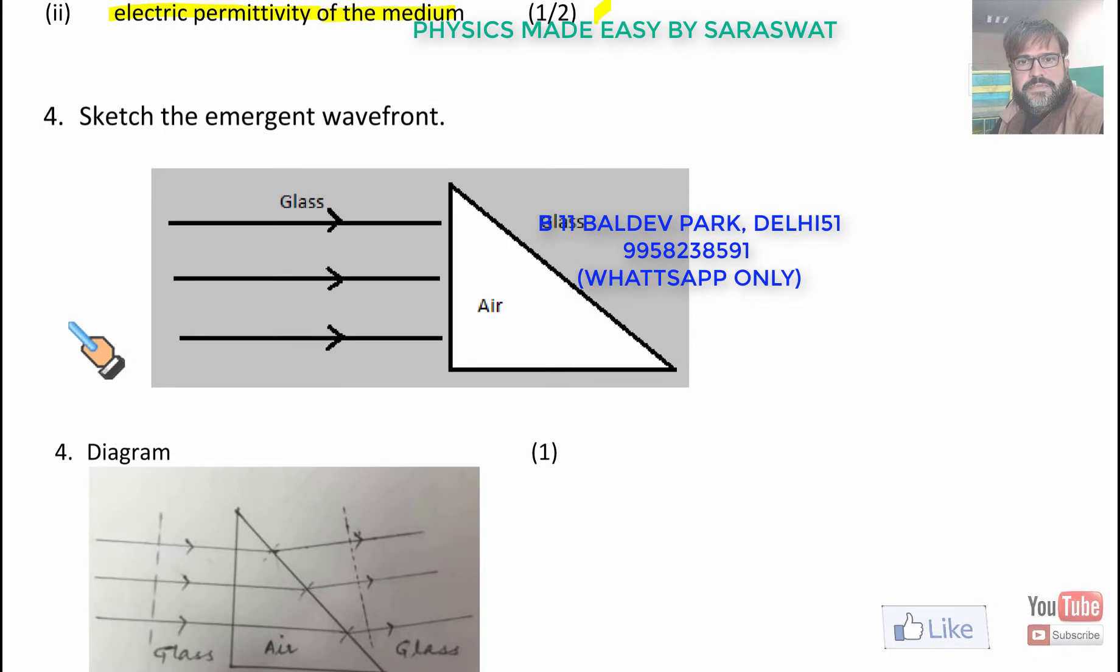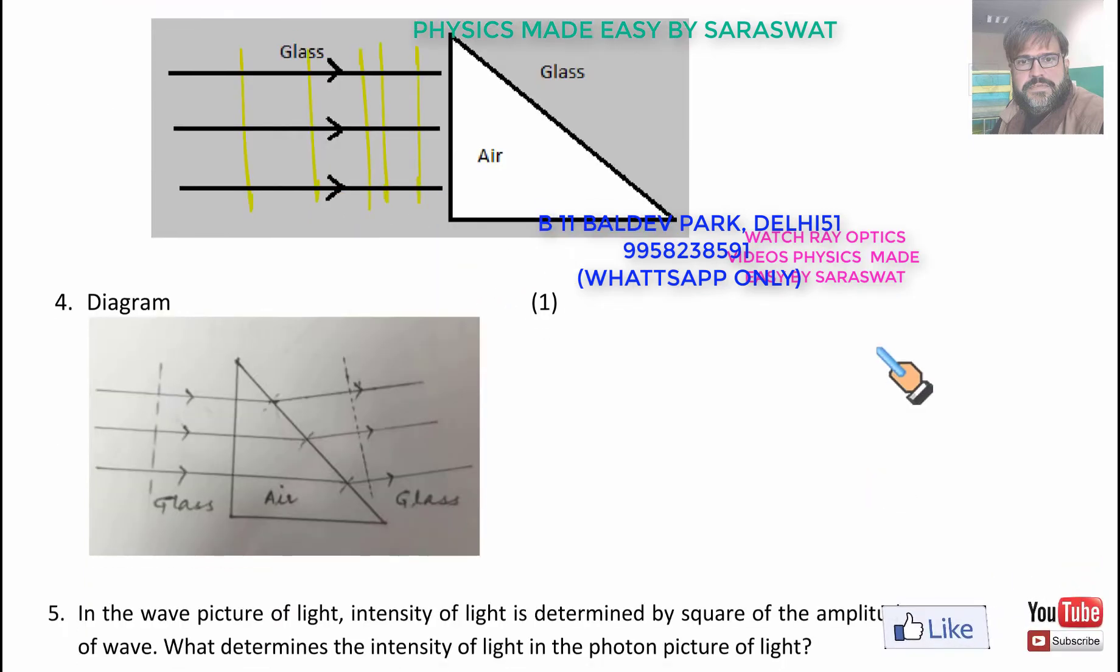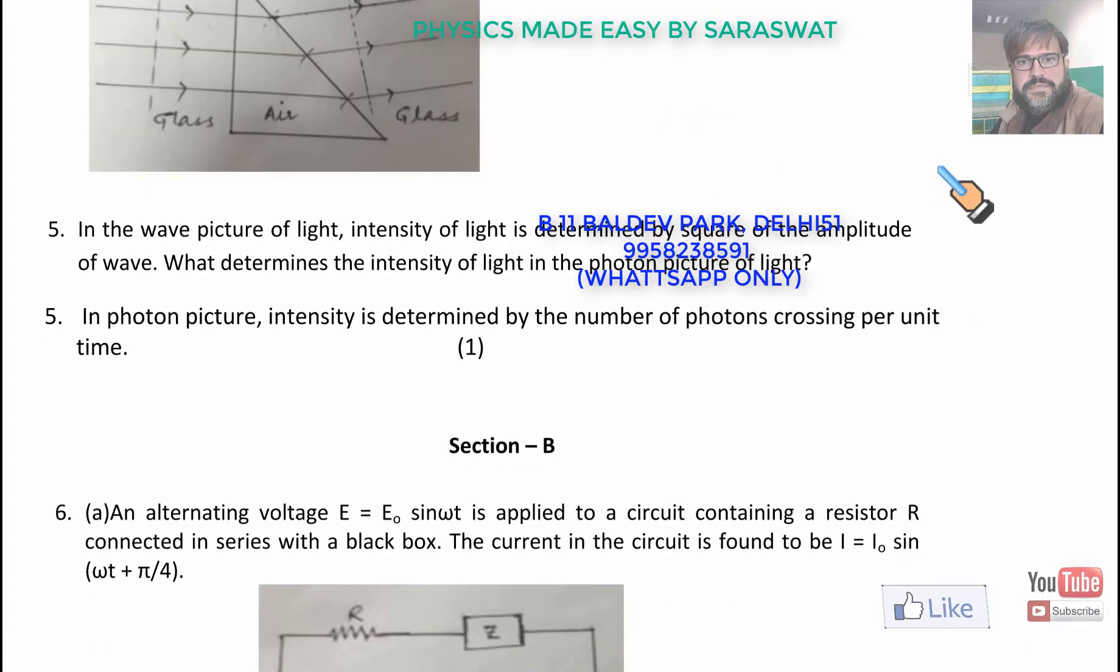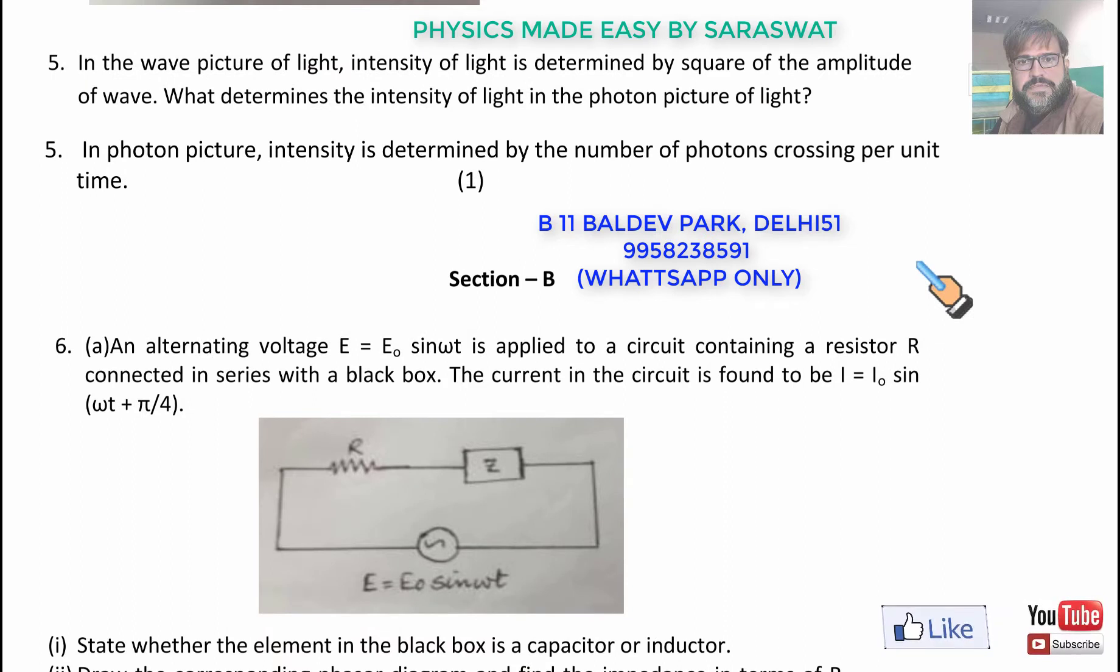Next, question 4. Sketch the emergent ray. We have light. This is the wavefront which is incident. Now, the rays go straight. This is the answer. The rays go straight, and then they again get refracted. So, the wavefront becomes like this.